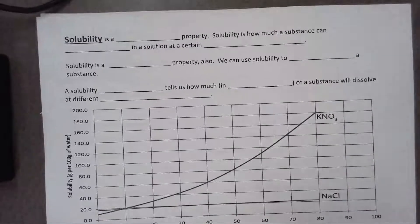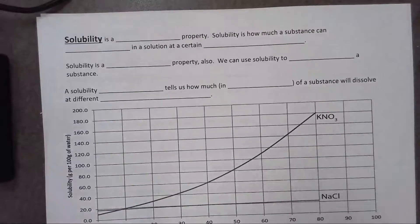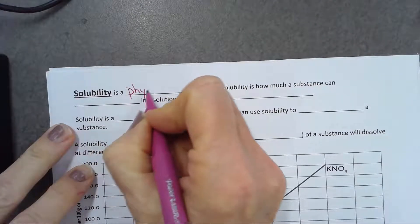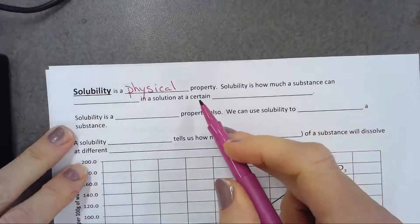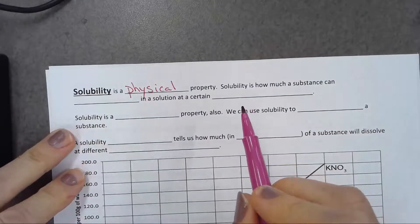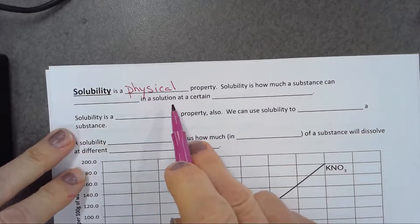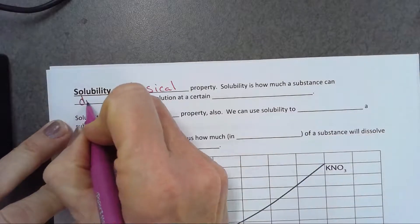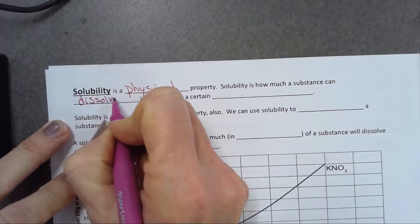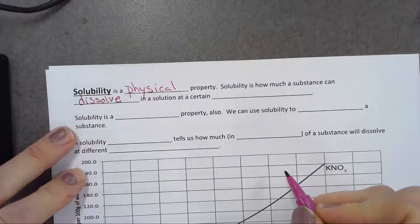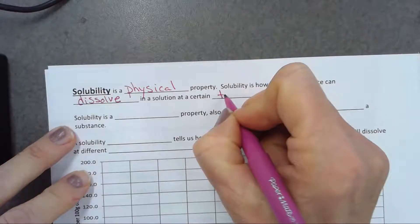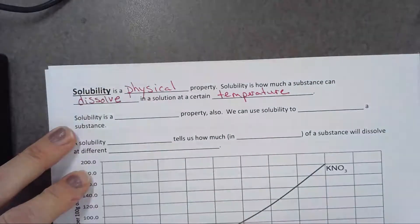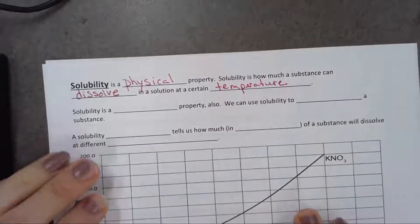Today we're going to take notes on solubility. Solubility is a physical property, just like density is. You're not going to change it by looking at it. Solubility is how much a substance can dissolve in a solution at a certain temperature. Dissolve is similar to being absorbed or to disappear.